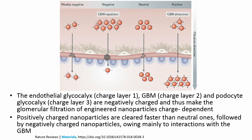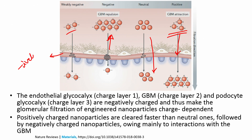Let us talk about how charge plays a role. Particles can also be charged — the charge could be negative, neutral, or positive. If the particle is fairly neutral there is not a whole lot of interaction happening. The basement membrane itself is negatively charged, so if you have positively charged particles, electrostatic interaction causes more to flow through and they are cleared faster. Weakly negative charge does not really play a major role, but if it is highly negatively charged the particles will be repelled by the basement membrane and will have a higher circulation time. Positively charged nanoparticles are cleared faster than neutral ones, followed by negatively charged particles.